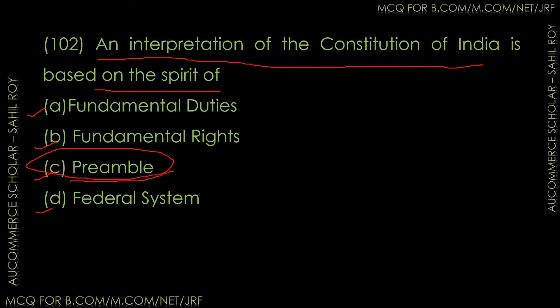When you studied civics in school in social studies, when you read the Indian Constitution, you should read the Preamble. The Preamble is a small piece that tells us about the rights, duties, and obligations. An interpretation of the Constitution of India is based on the spirit of the Preamble. Option C is the correct answer.